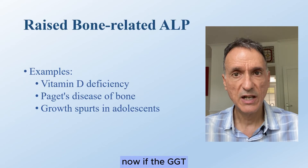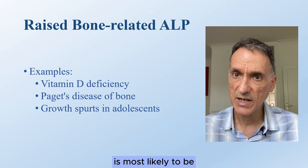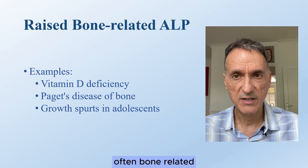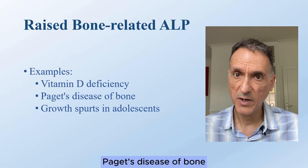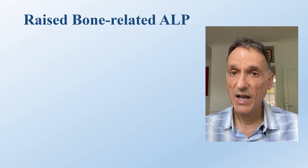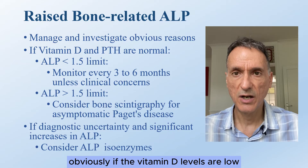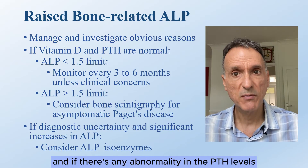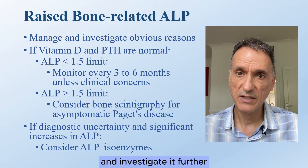If gamma GT levels are normal, the raised alkaline phosphatase level is most likely from a non-hepatic source, often bone-related. This can be due to vitamin D deficiency, Paget's disease of bone, or growth spurts in adolescence. If vitamin D levels are low, treat the deficiency accordingly; if there's any abnormality in PTH levels, manage and investigate further.